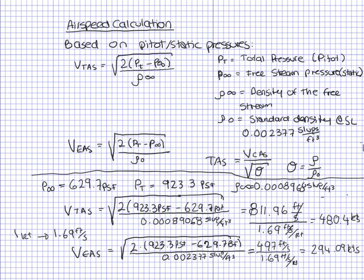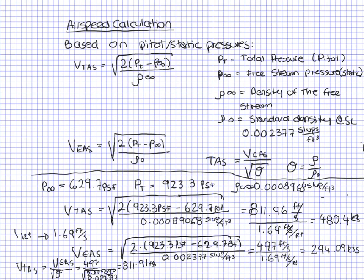To verify, we use the formula: true airspeed equals equivalent airspeed divided by the square root of the density ratio. That's 497 divided by the square root of (0.000890 divided by 0.0002377). That gives 811.91 feet per second, which matches our original true airspeed calculation, so it's verified.